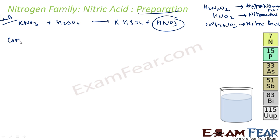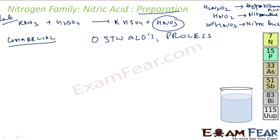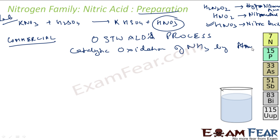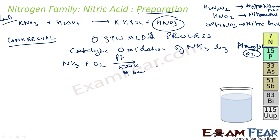For the commercial preparation of nitric acid in bulk, we use the Ostwald process. This process is based on the catalytic oxidation of ammonia by atmospheric oxygen. Ammonia is oxidized in the presence of a platinum gauge catalyst at around 500 Kelvin and 9 bar pressure. The balanced equation gives NO and water.